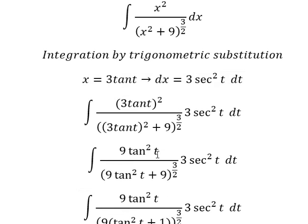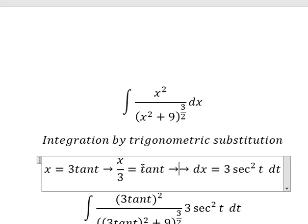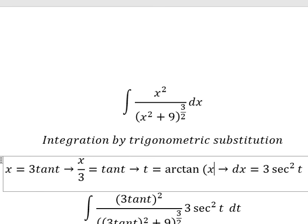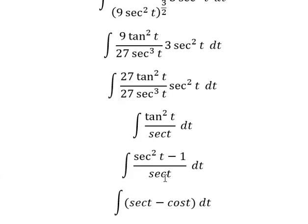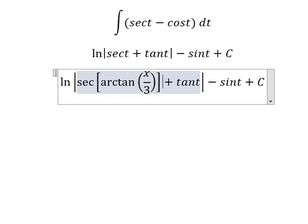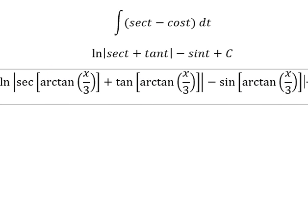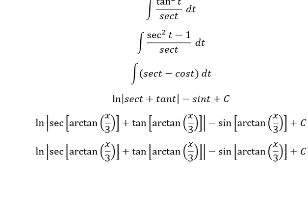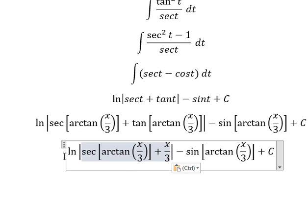For back-substitution, we divide both sides by 3, so t equals arctan(x/3). We put this back to replace t and express everything in terms of x over 3.